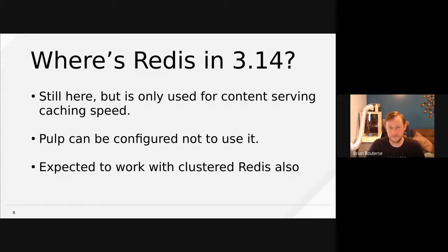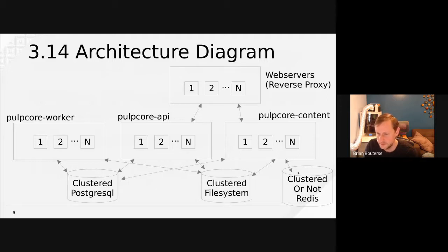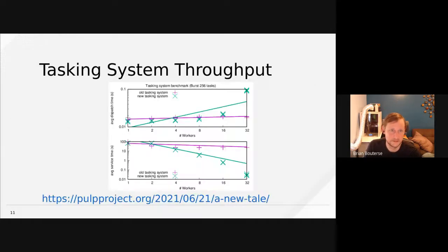Great work to Jared and Daniel for working on making Redis our content serving cache speedup. We should now be able to work correctly with a clustered deployment of Redis. The updated architecture diagram is the same as before, with clustered or non-clustered Redis in the corner connected to Pulp Core Content. The older pre-3.13 architecture used the traditional tasking system with a resource manager and required a non-clustered Redis — it's not the focus of this talk since everyone should be using the new tasking system.